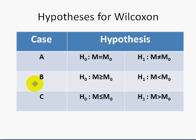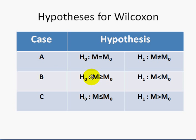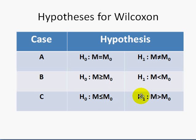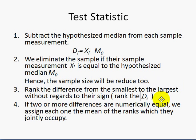These are the hypotheses for Wilcoxon. There are three cases that we should know. For Case A, H-null states the median is equal to the hypothesized median, and H1 states the median is not equal to the hypothesized median. For Case B, H-null states the median is greater than or equal to the hypothesized median, and H1 states the median is less than the hypothesized median. For Case C, H-null states the median is less than or equal to the hypothesized median, while H1 states the median is larger than the hypothesized median.